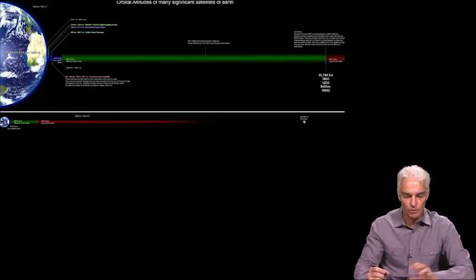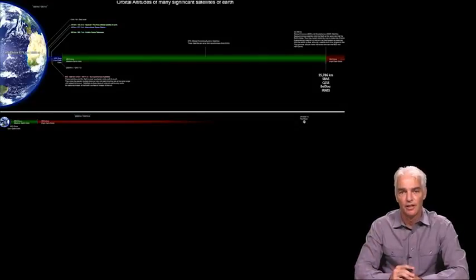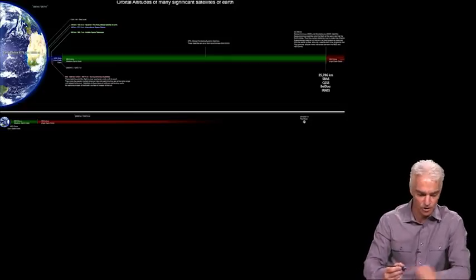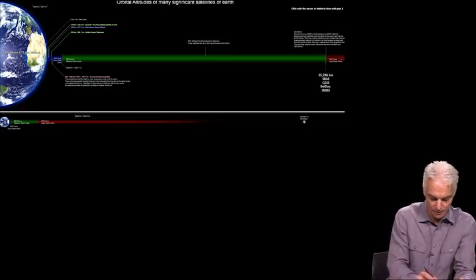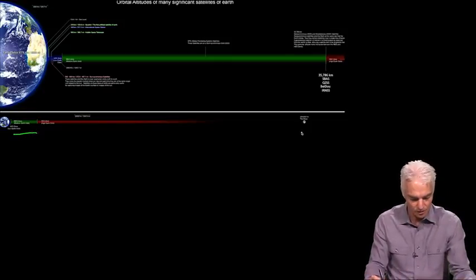What you're seeing here is across the top, you can see the Earth and the green zone from the left edge of that green bar to the right edge is basically where all the satellites can be found. Then below the white line you can see that green bar shrunk down so that we can fit to scale the moon out here.